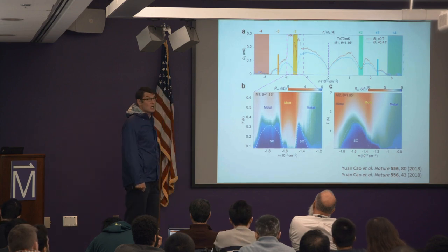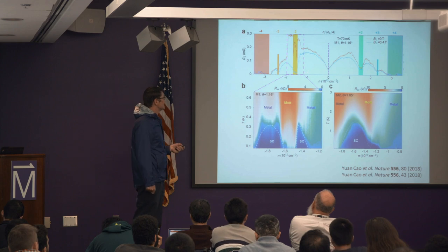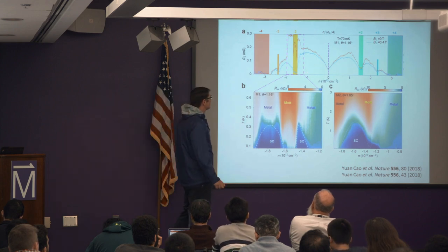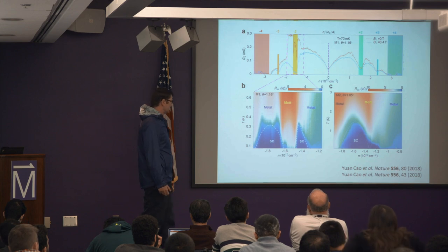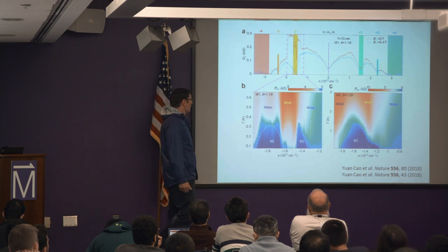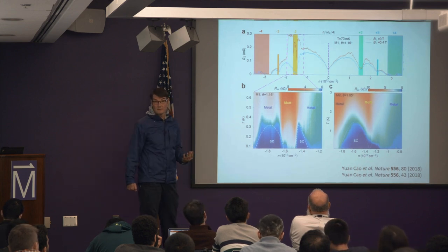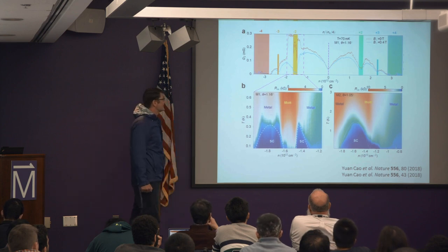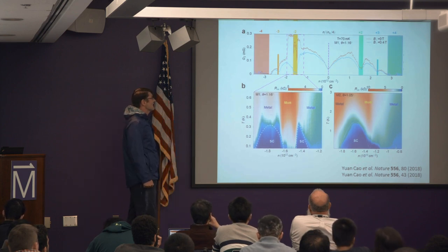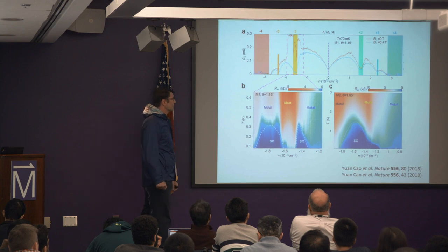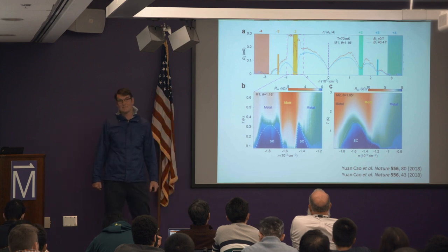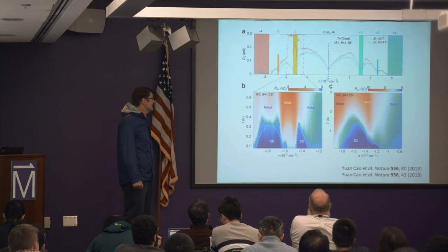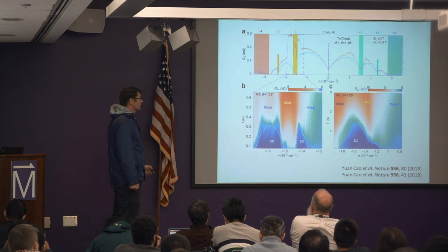This insulating behavior does not happen if the angle is tuned significantly away from the magic angle — for example at about 1.27°. There was previous data at 1.8° published by Pablo's group a couple of years ago showing superlattice band gaps but no signatures of correlations. The basic idea is to understand what's going on.